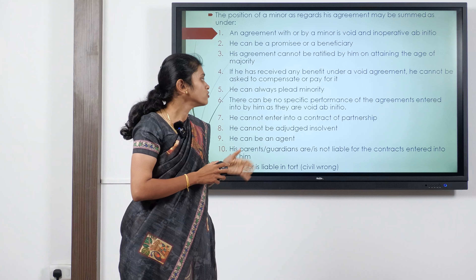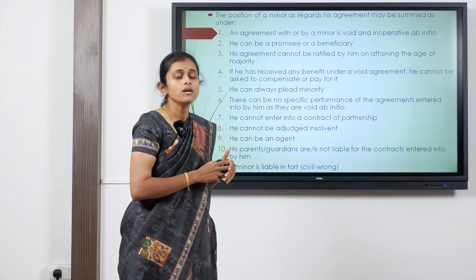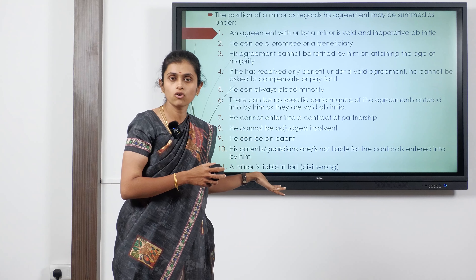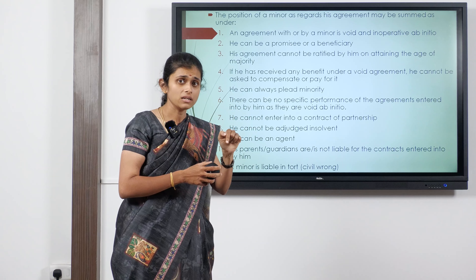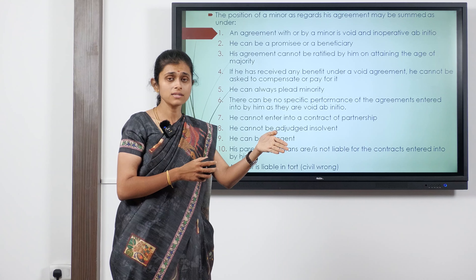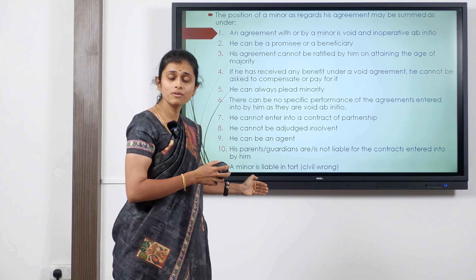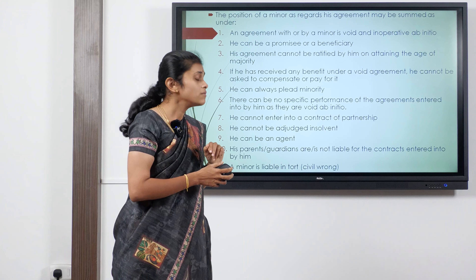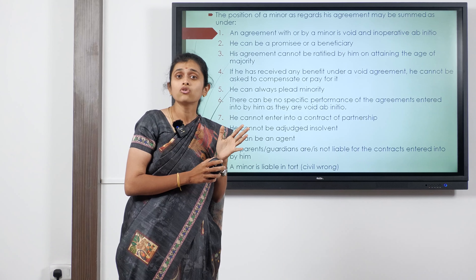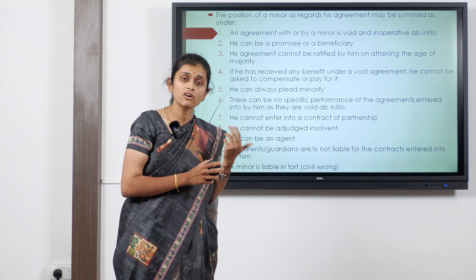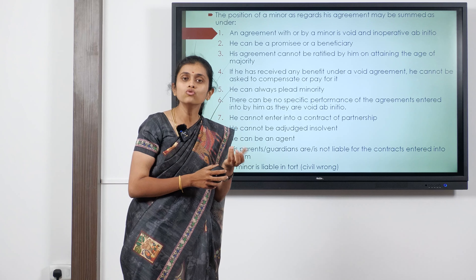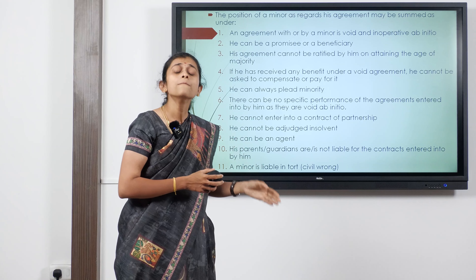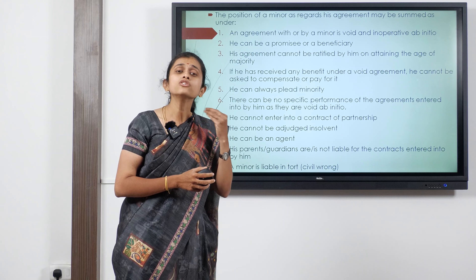Tenth, parents or guardians are not liable for contracts entered into by a minor — guardians or parents cannot be held liable for a minor's performance or non-performance. However, if a minor is acting on behalf of his parents or guardians, the rule of principal and agent applies and they can be held responsible. Lastly, a minor is liable in tort. A tort is a civil wrong — if a minor enters into an agreement to smuggle illegal goods or commit a crime, the minor will be held responsible and sued in court.